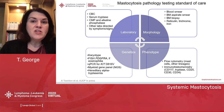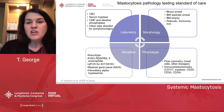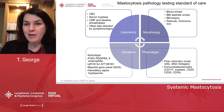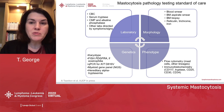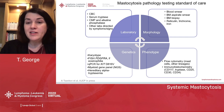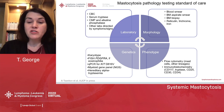In terms of mastocytosis pathology testing standard of care, you need typical laboratory studies like CBC and serum tryptase. For morphology, look at the blood smear, bone marrow aspirate smear, bone marrow biopsy, and assess for fibrosis with reticulin and trichrome stains. Also look for associated hematologic neoplasms like MDS — iron stains for ring sideroblasts. Phenotyping can be done by flow cytometry on fresh bone marrow aspirate or by immunohistochemistry on the bone marrow biopsy.